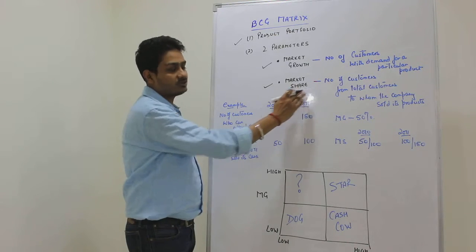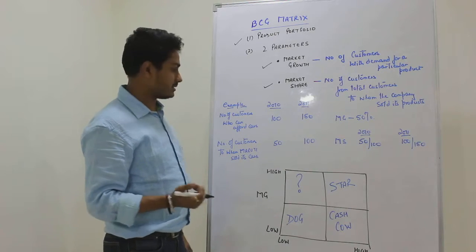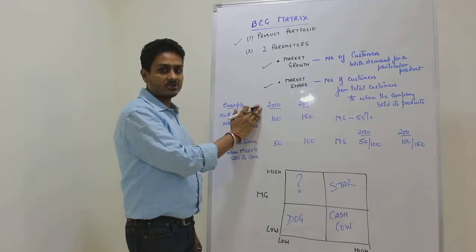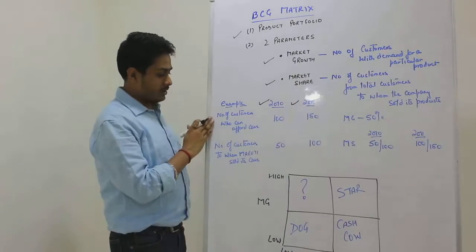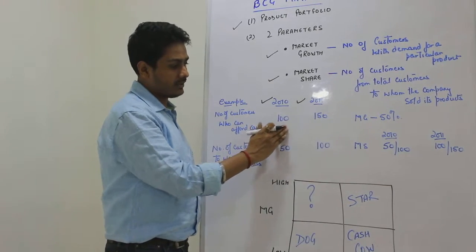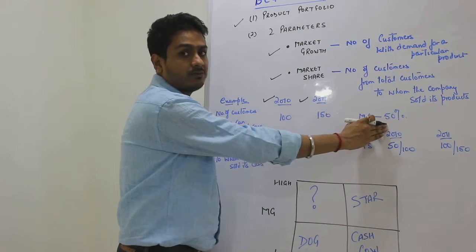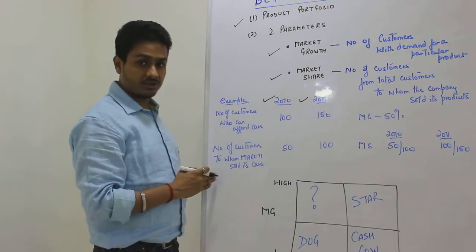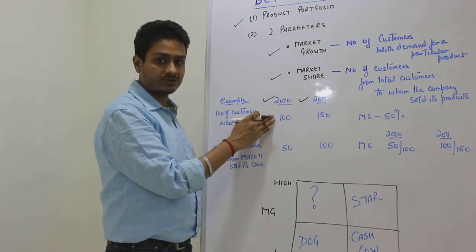Let's take an example to understand. We have two financial years, 2010 and 2011. Number of customers who could have afforded a car in 2010 was 100 and now are 150, so the market has grown by 50%.